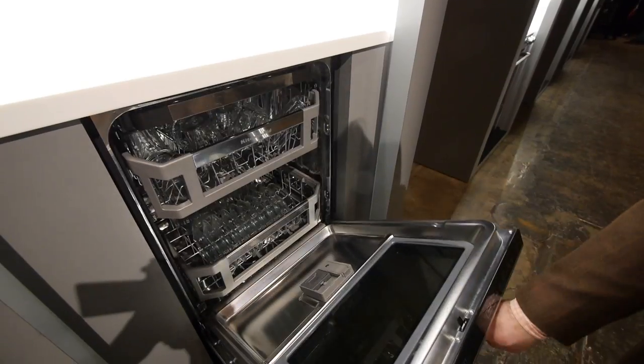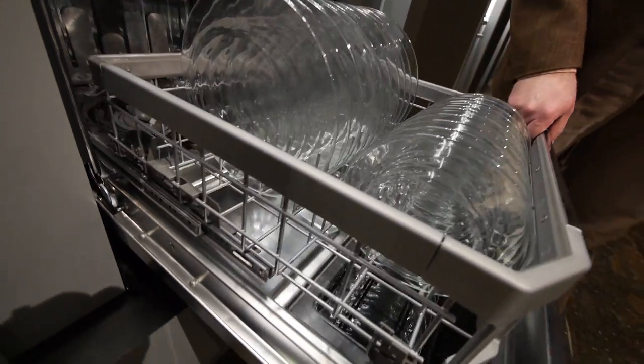First, the bottom rack. The first thing you notice when you pull it out is that it's on ball bearings. It's called the Satin Glide Rack and it's very smooth.